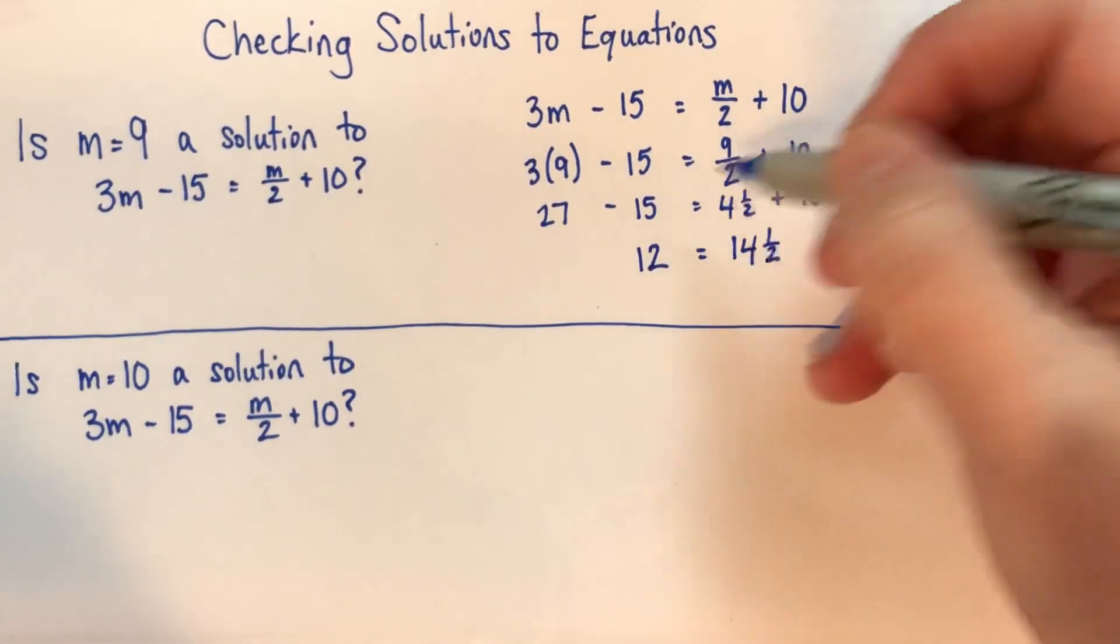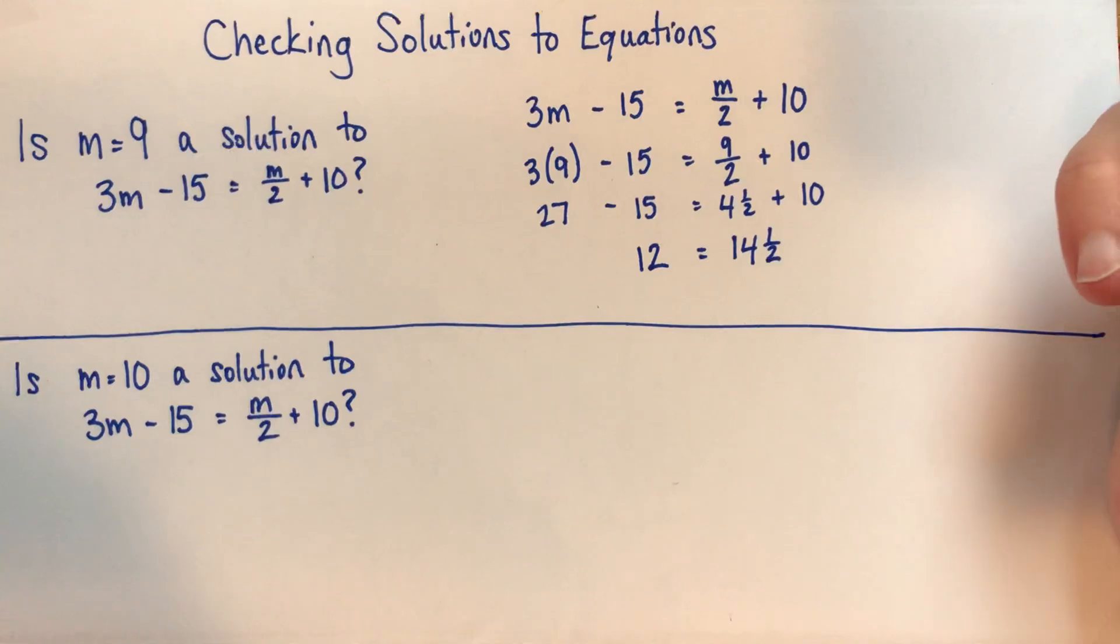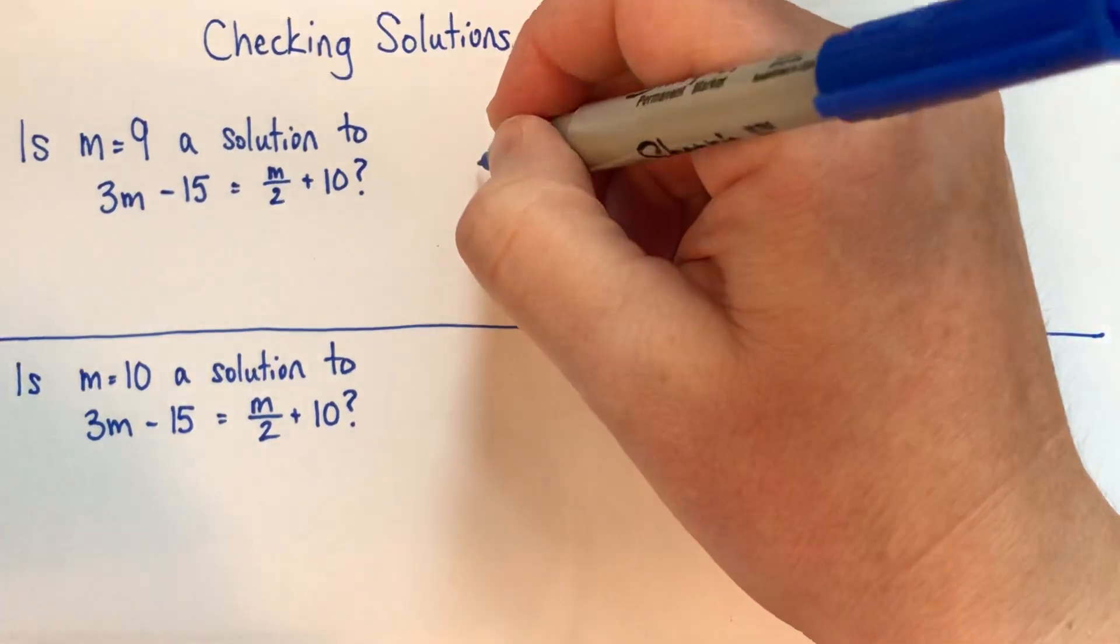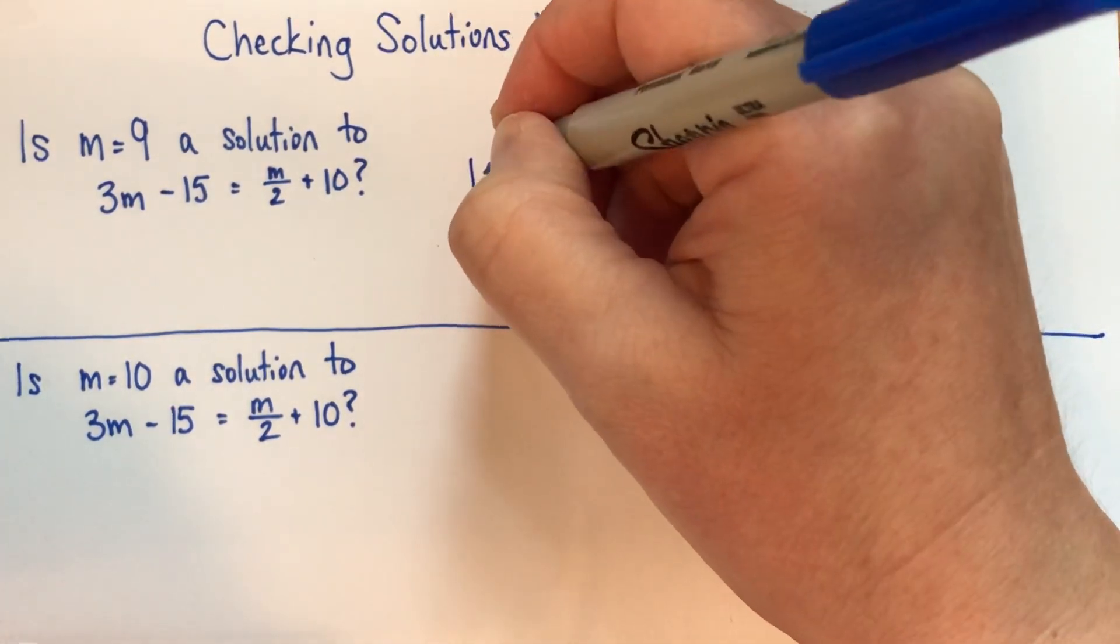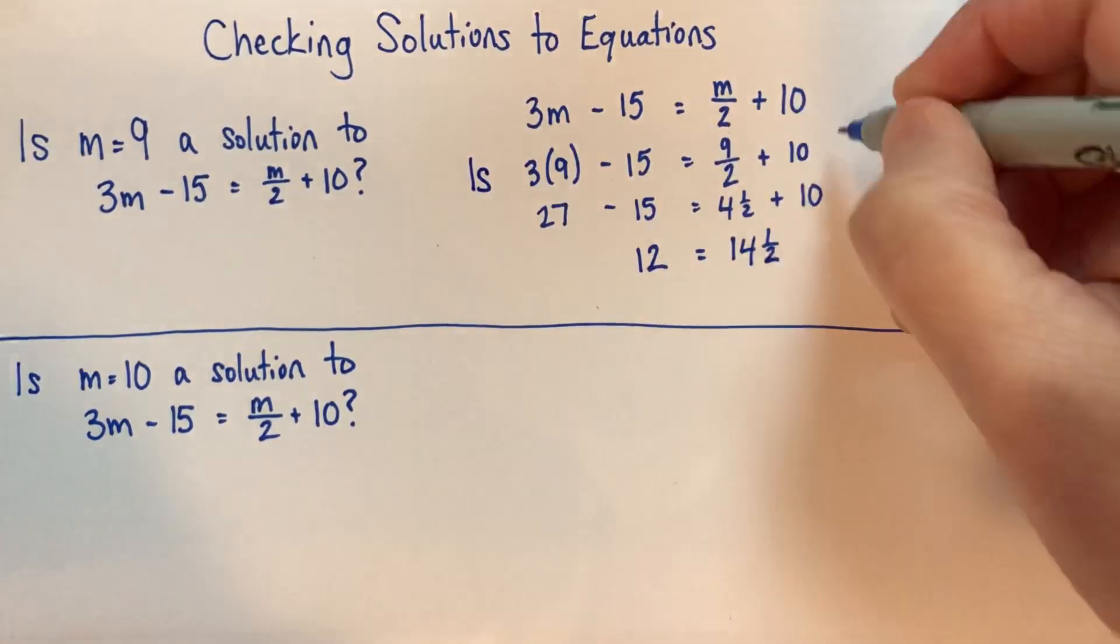And this is also a lie here. So you can put bars through them to make them all not equal to signs. But I think a better way that also shows your thinking about it is that what we were asking, and probably what I said out loud, is I said the word, is this equal to that?